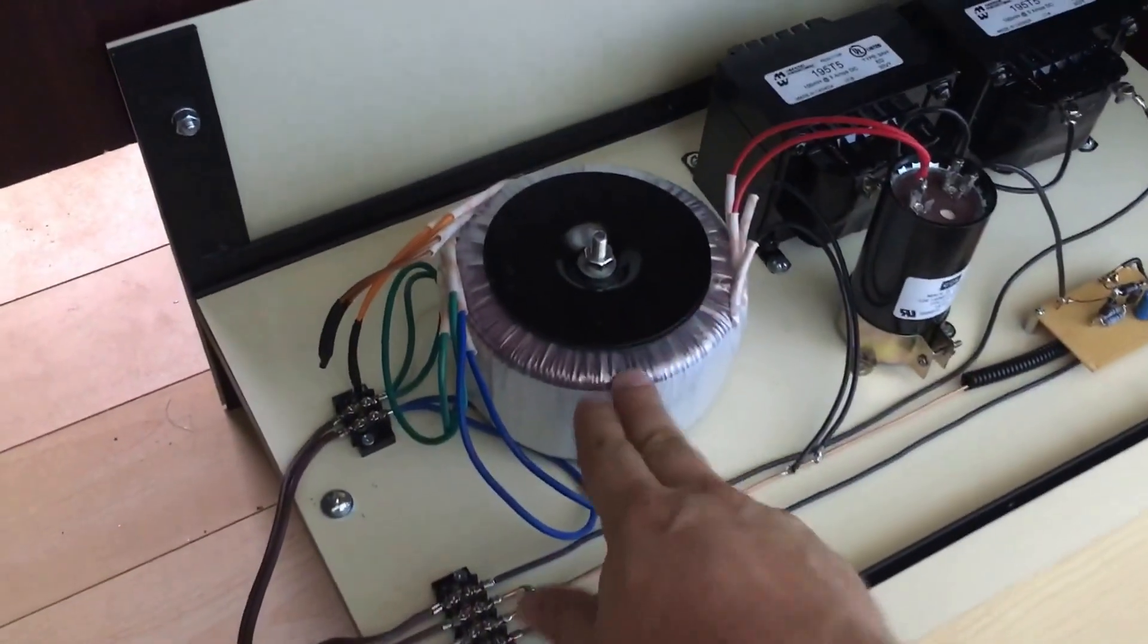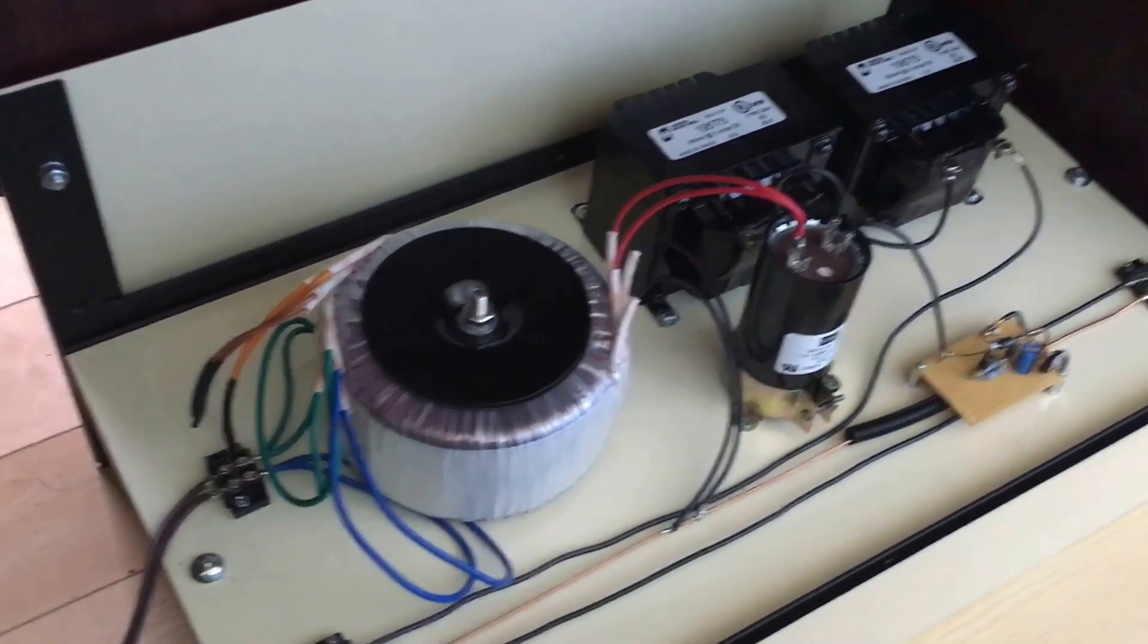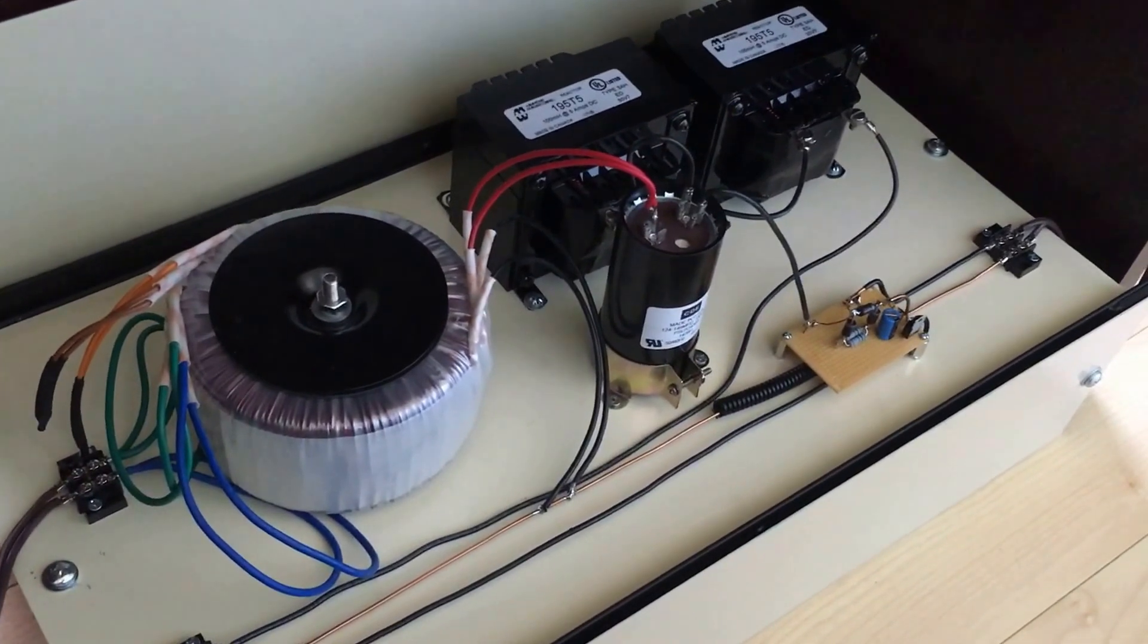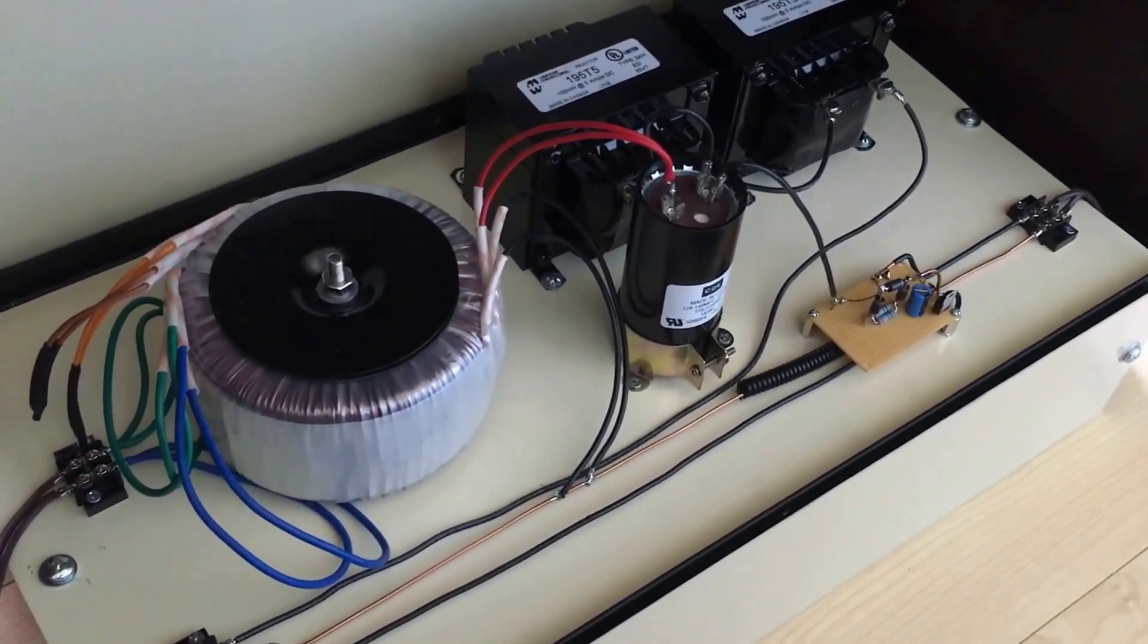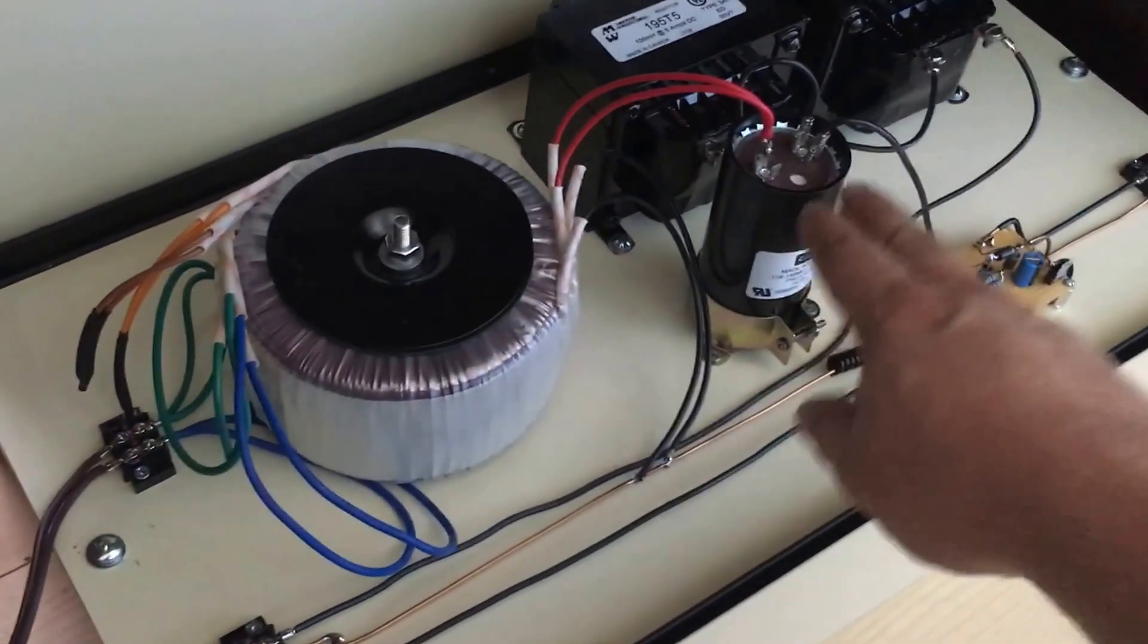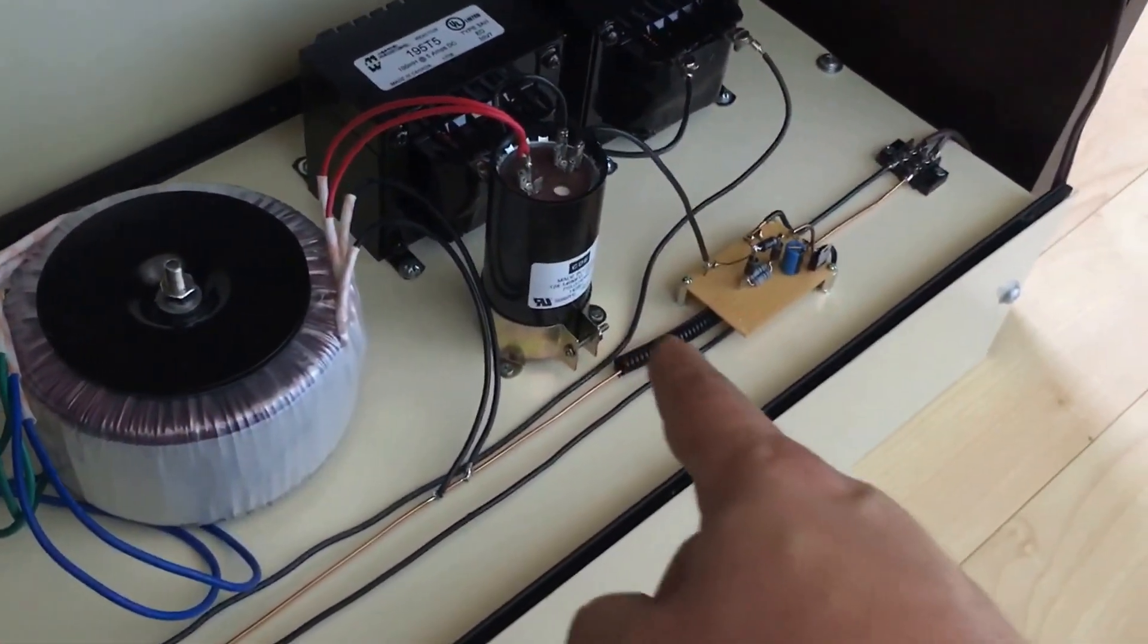So I have a 50 volt to 120 volt transformer serving as the modulation transformer and this is the Heising circuit. It uses two series Hammond chokes and a capacitor.